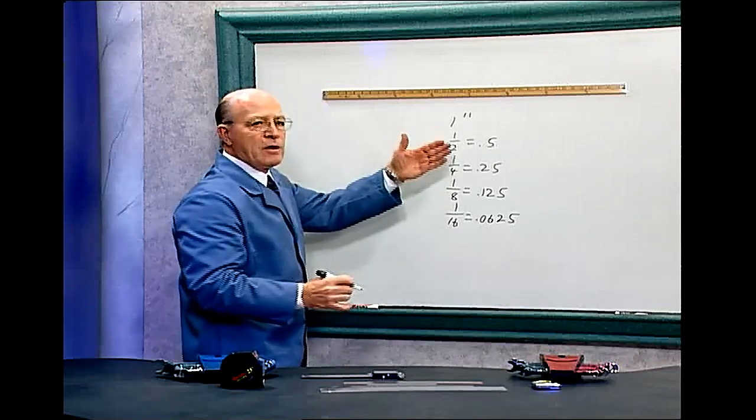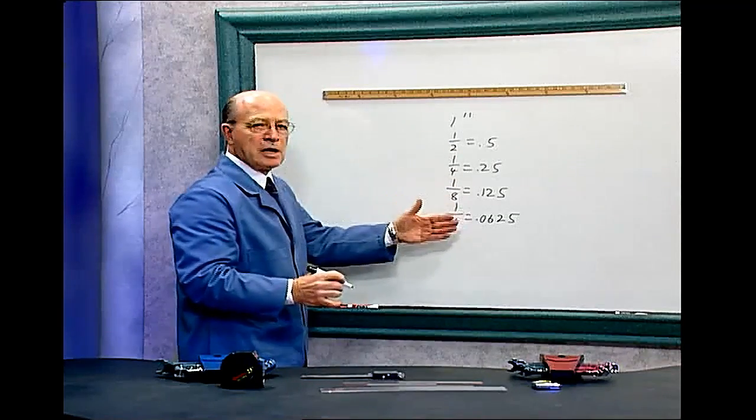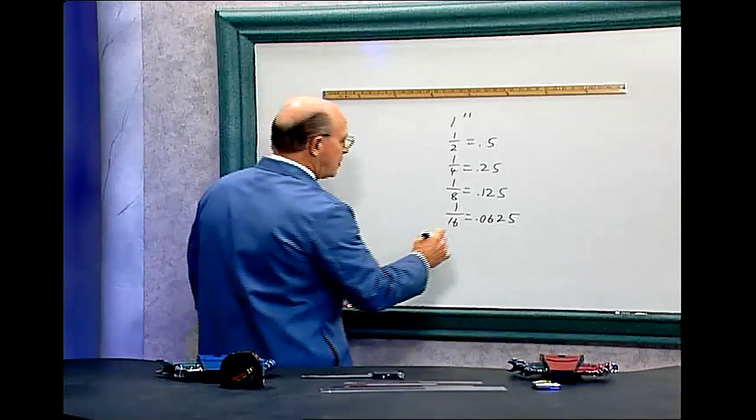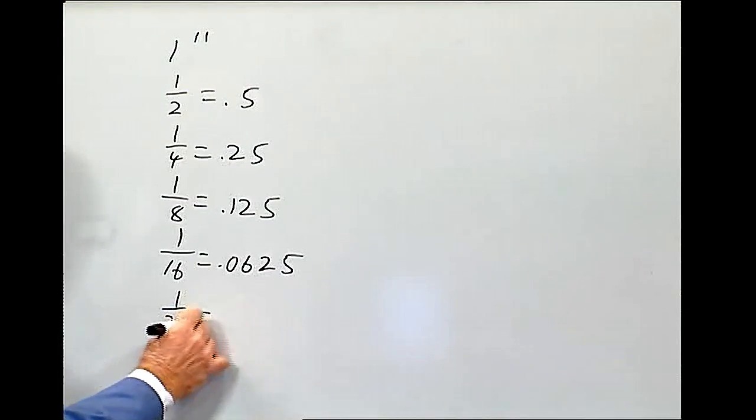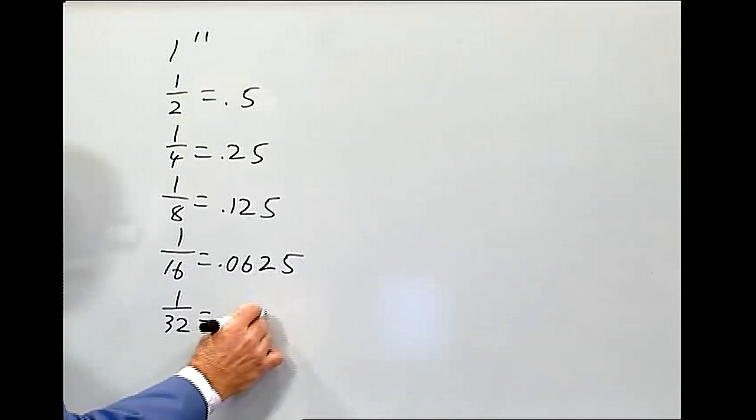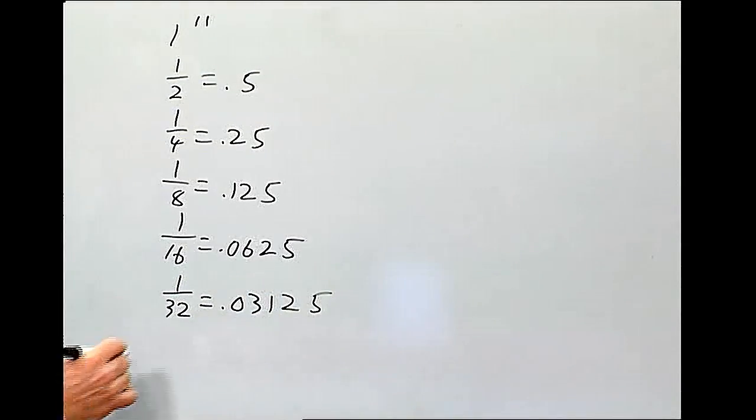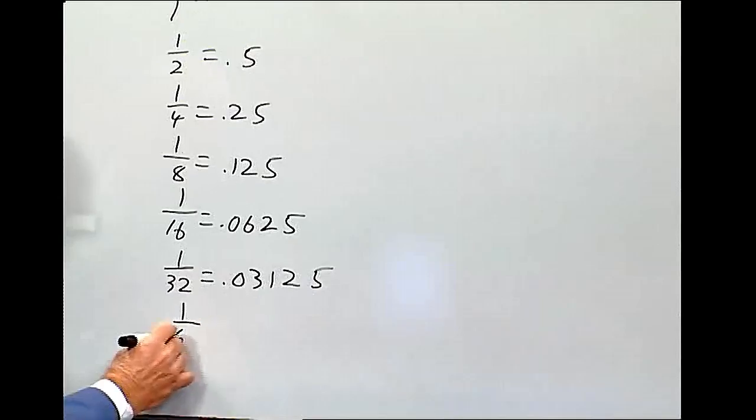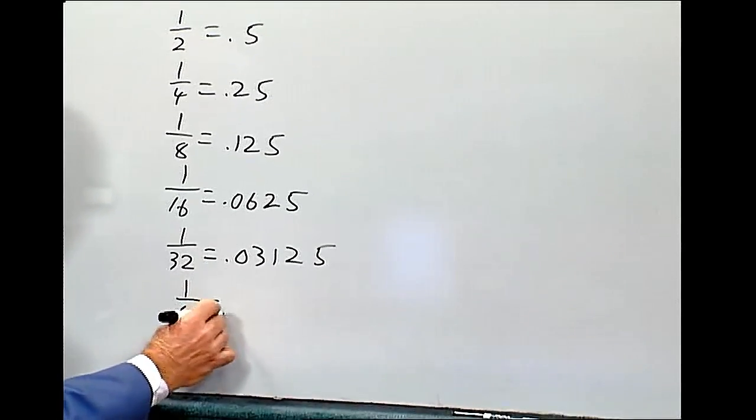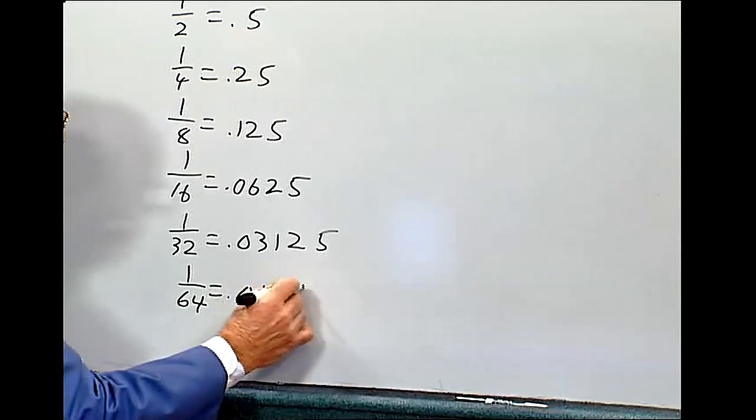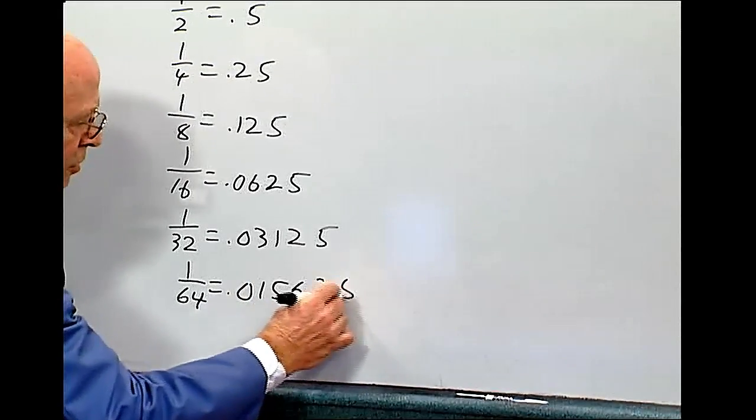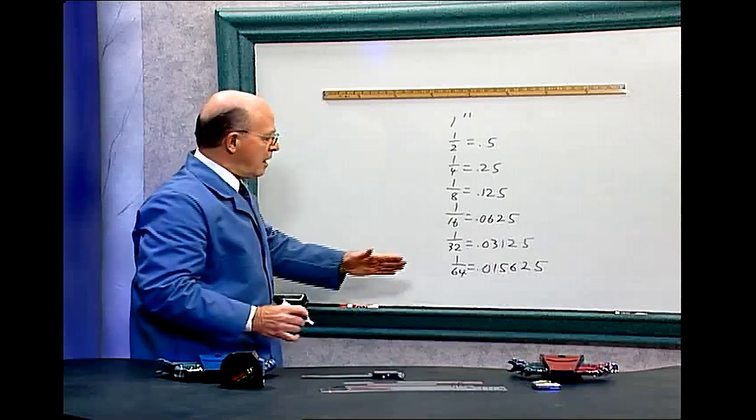As you can see, we're having problems now when we start getting into these numbers. If you get one-thirty-second equals point oh-three-one-two-five. And one-sixty-fourth equals point oh-one-five-six-two-five. And that's it.